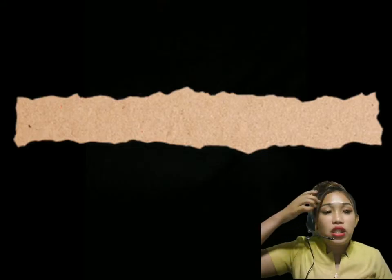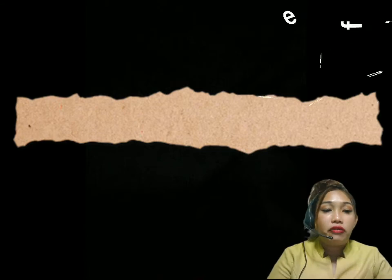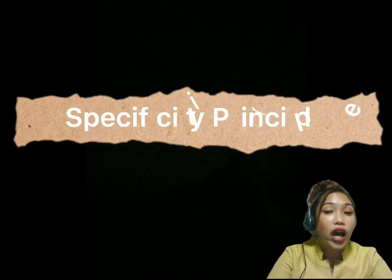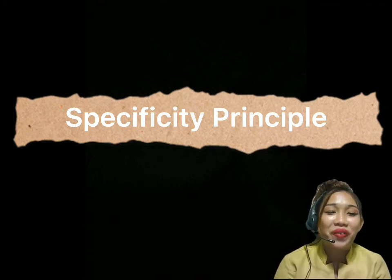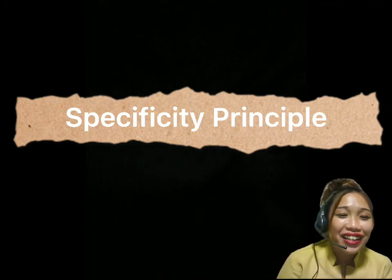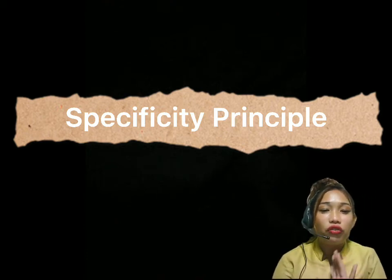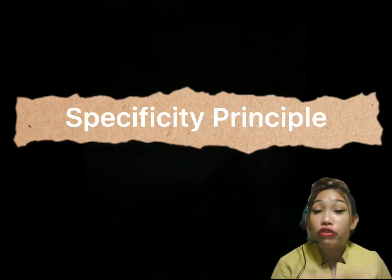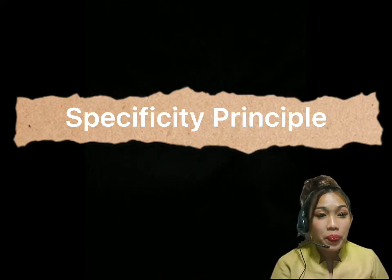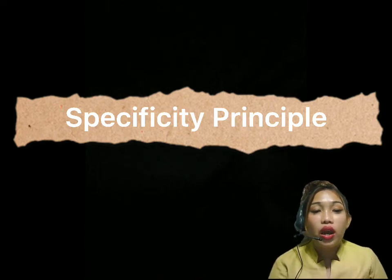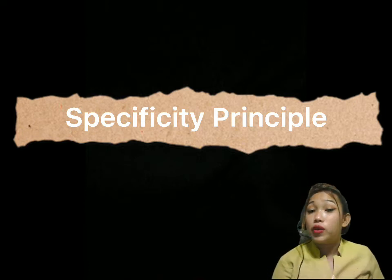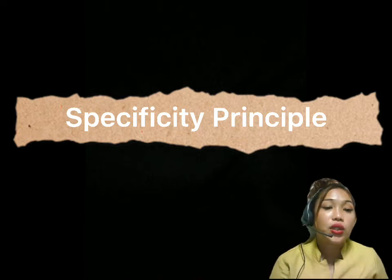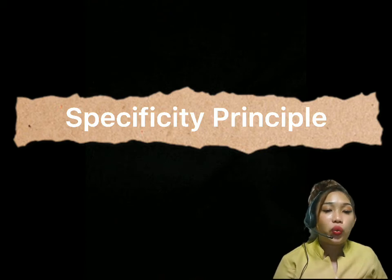Next, we have the specificity principle. The specificity principle states that each form of activity would produce different results. This means that if one has a specific gain in mind, one must plan and execute activities that would target those goals.